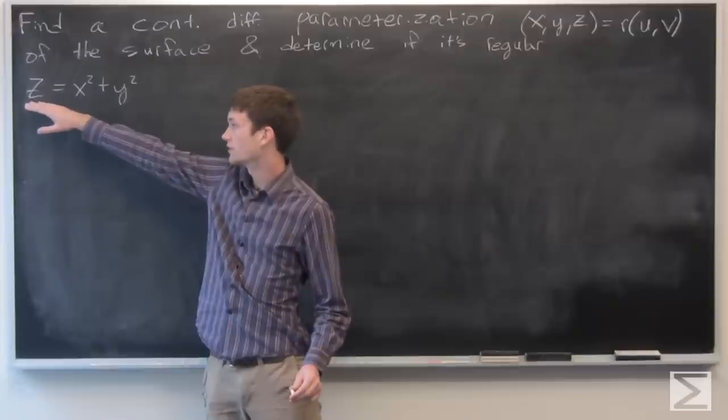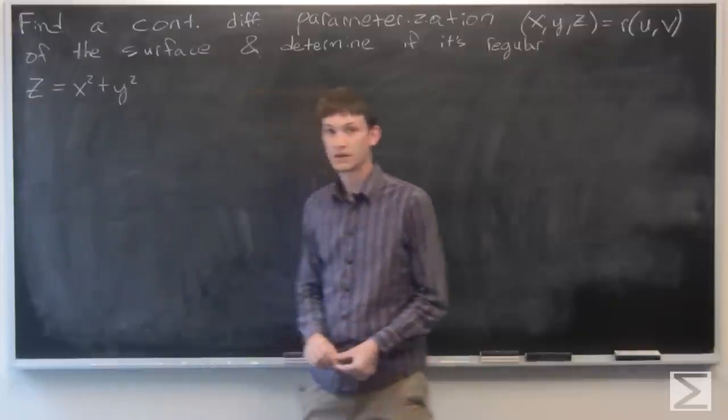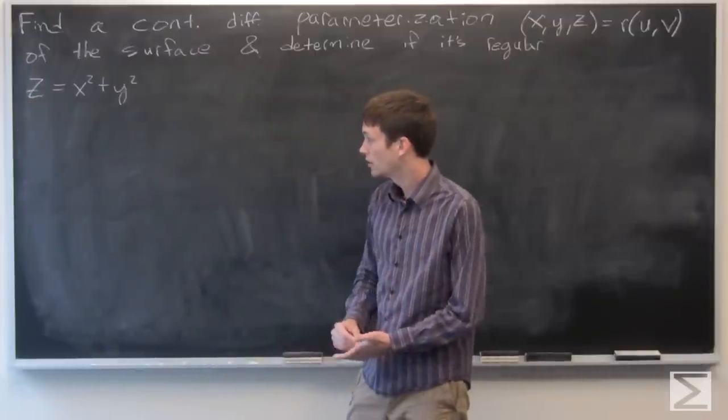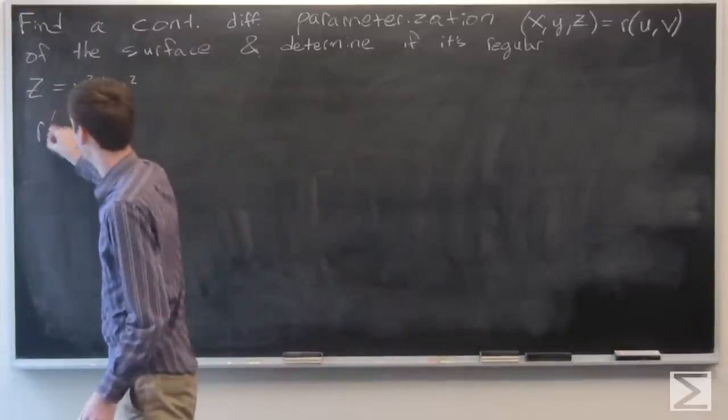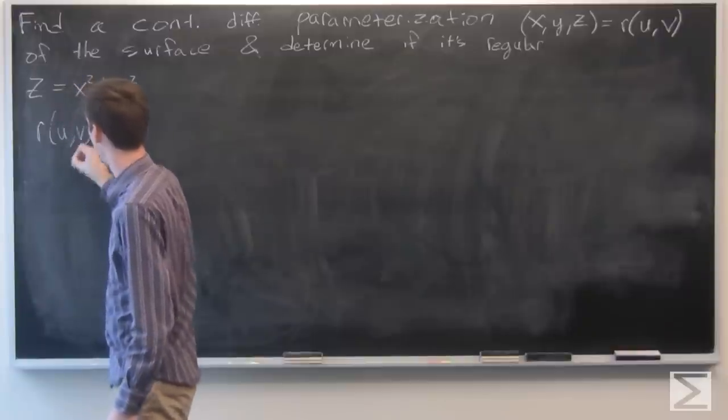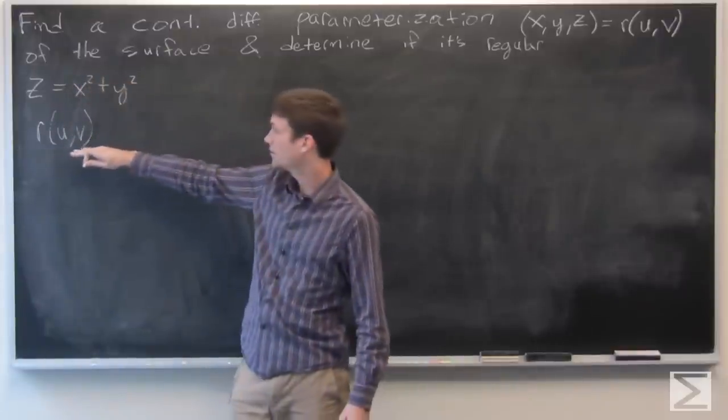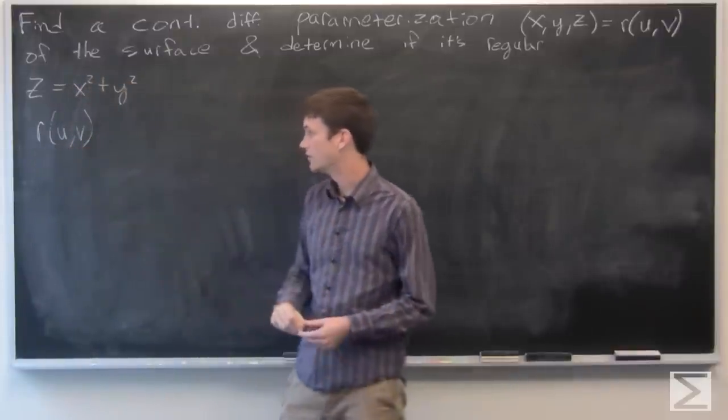So our surface is z equals x squared plus y squared. We want an r of u, v. So we want three components in terms of u and v.